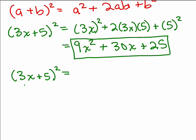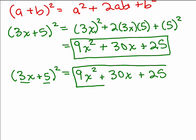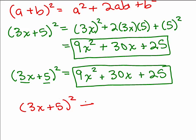Someone might be able to go directly to the answer, but nobody should write it as 9x squared plus 25 — we know that's not equal. There's going to be that middle term of 30x.